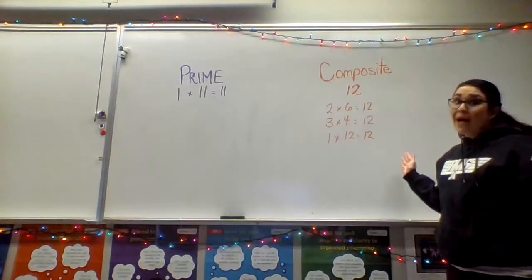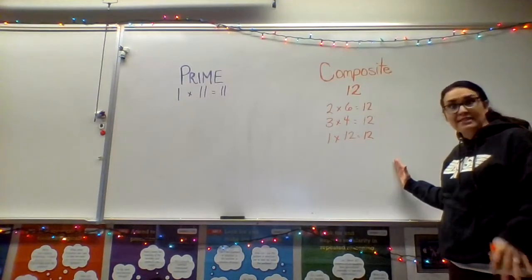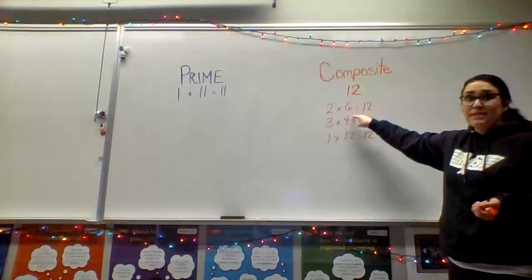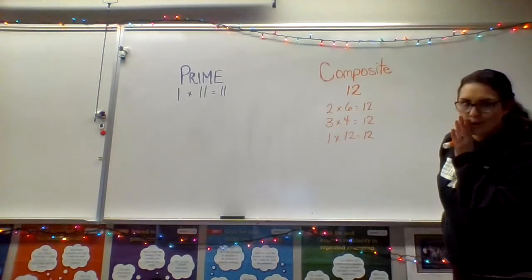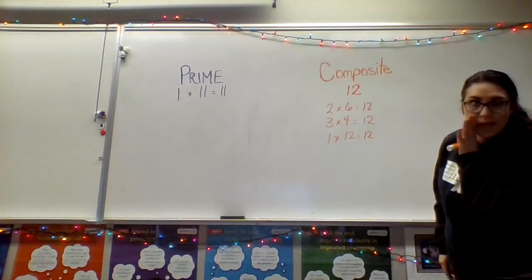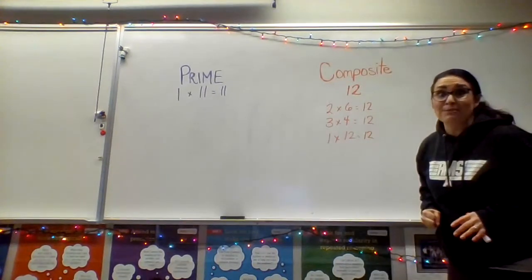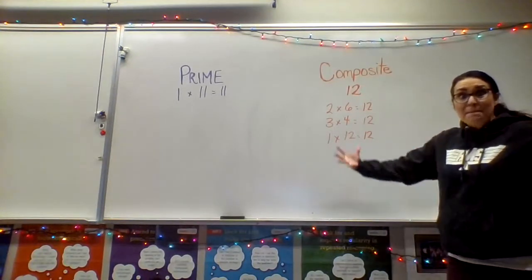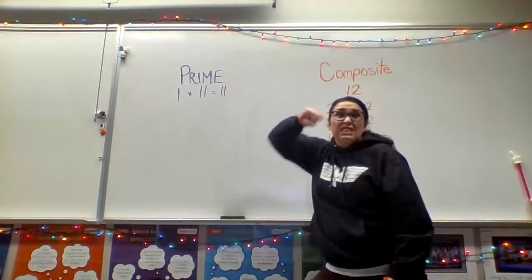So here's what I mean by that. 12 is a composite number, and I know that because there are at least three different ways I can use multiplication to get 12 as my product. I can do 2 times 6 equals 12, or 6 times 2 equals 12, or 3 times 4 equals 12, or 4 times 3 equals 12, or 1 times 12 equals 12, or 12 times 1 equals 12. Composite means there are lots of different ways you can multiply to get that composite number as your product — it's made up of lots of different pieces, versus prime which is just one.